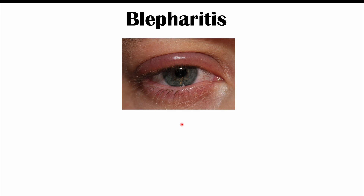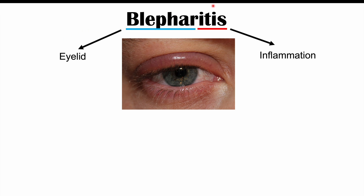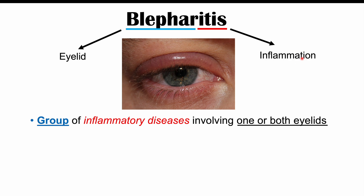If we break down the word blepharitis, the prefix 'blephar' refers to the eyelid and the suffix 'itis' refers to inflammation. The term blepharitis is used to describe a group of inflammatory diseases involving one or both eyelids.